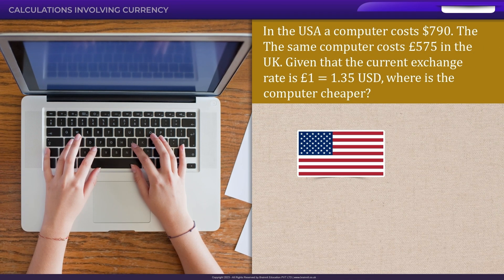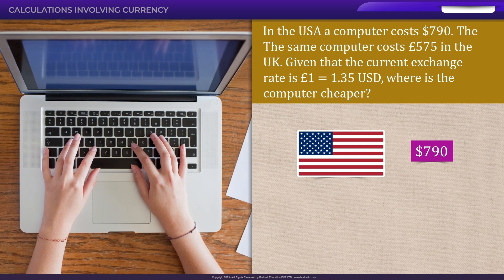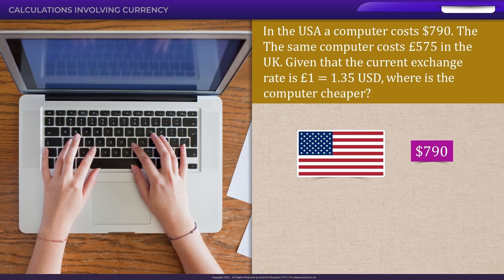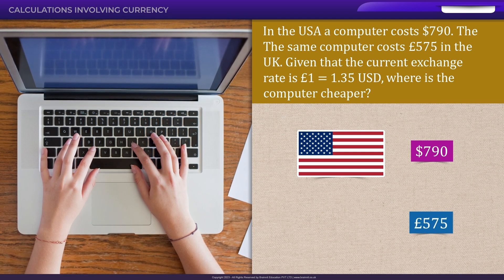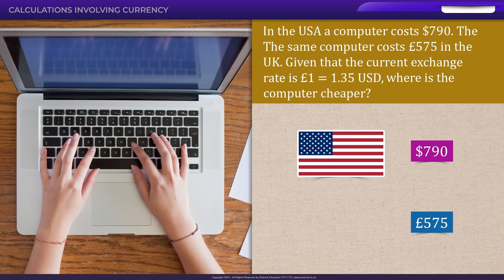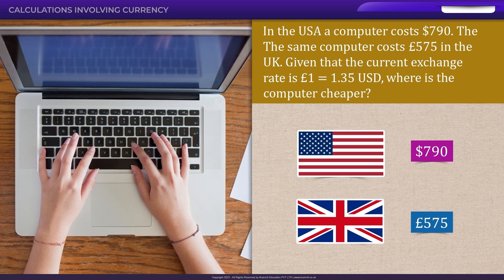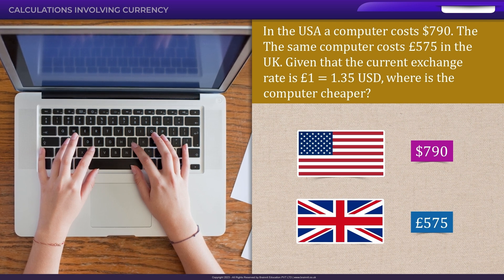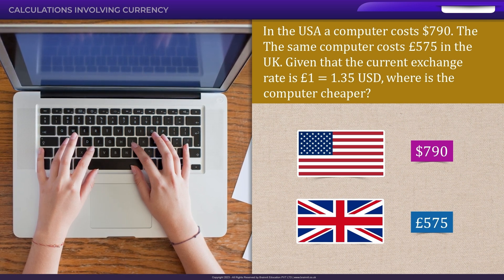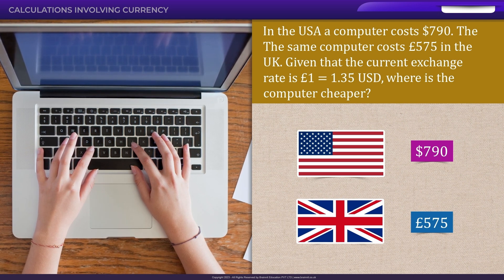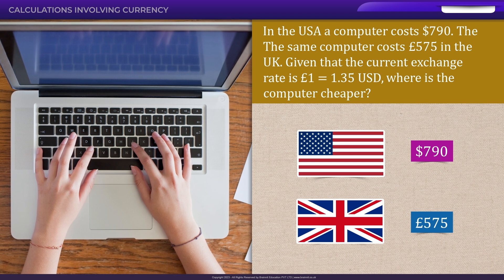In the USA, a computer costs $790. The same computer costs £575 in the UK. Given that the current exchange rate is £1 to $1.35, where is the computer cheapest?